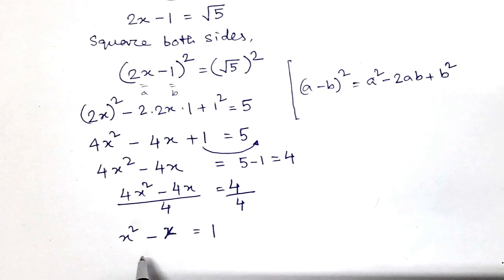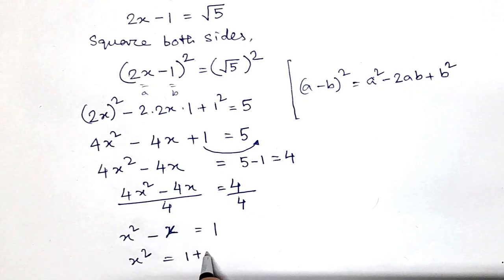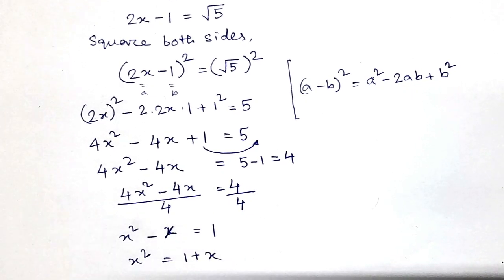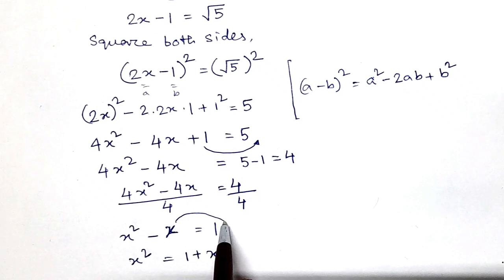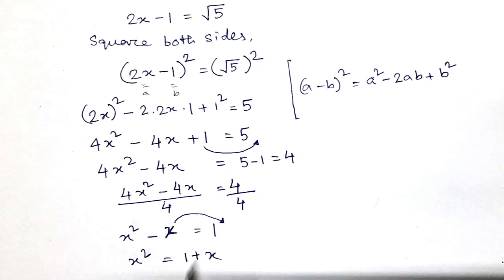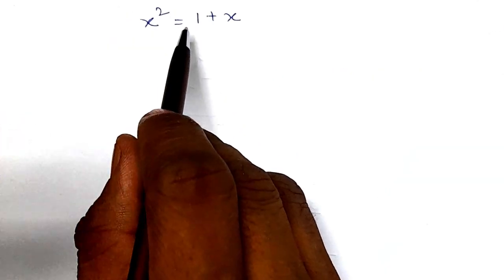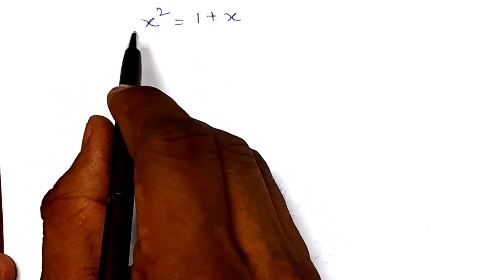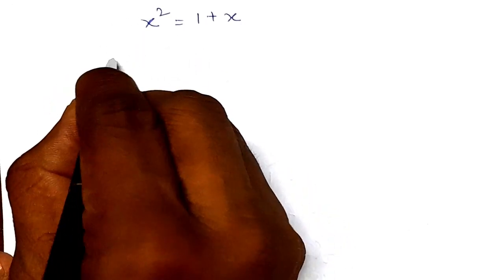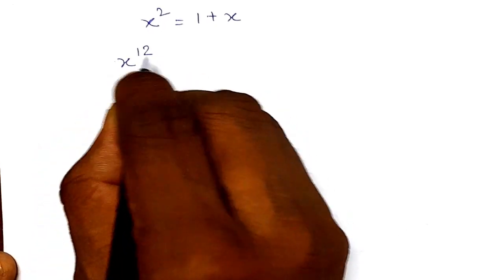Dividing through by 4: 4x² divided by 4 is x², and 4x divided by 4 is x, and the right side 4 divided by 4 is 1. So we have the very important relationship x² equals 1 plus x. We have shifted x to the right hand side. This is a very important relationship, and now we will find the value of x to the power 12.